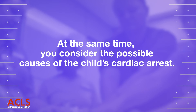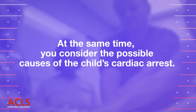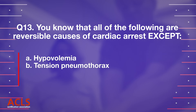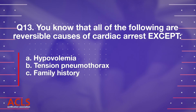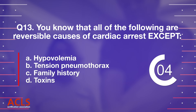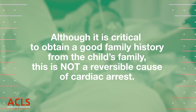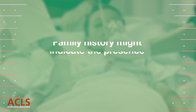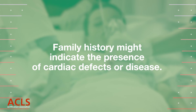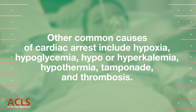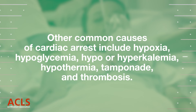At the same time, you consider the possible causes of the child's cardiac arrest. Question 13: All of the following are reversible causes of cardiac arrest EXCEPT: A) Hypovolemia, B) Tension pneumothorax, C) Family history, D) Toxins. Correct answer: C) Family history. Although it is critical to obtain a good family history, this is not a reversible cause. Other common causes include hypoxia, hypoglycemia, hypo- or hyperkalemia, hypothermia, tamponade, and thrombosis.